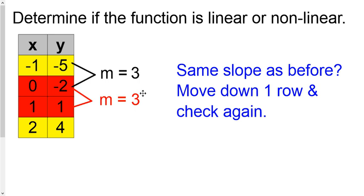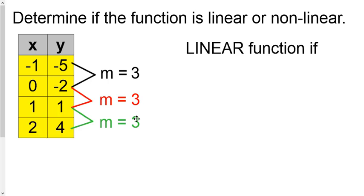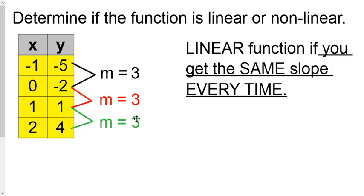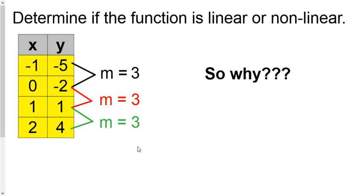If you get the same slope as before, slide down one more row. So instead of using rows two and three, we'll use rows three and four, plug them into the slope formula. Amazingly, we get the same slope all the way down — so it's a linear function. The slope must be the same every single time, not just most of the time. If you ever get a different slope, that would be nonlinear.